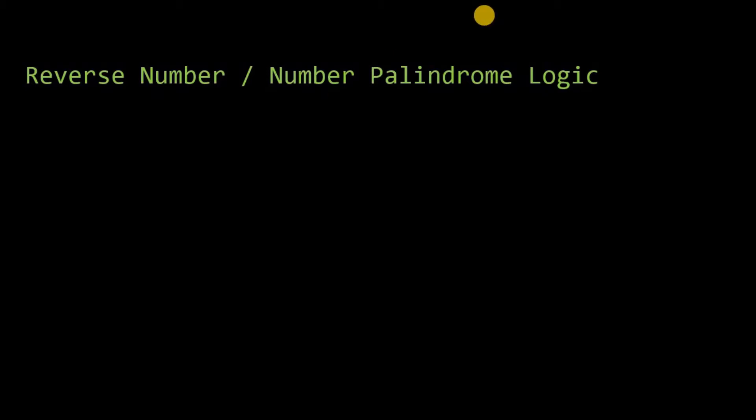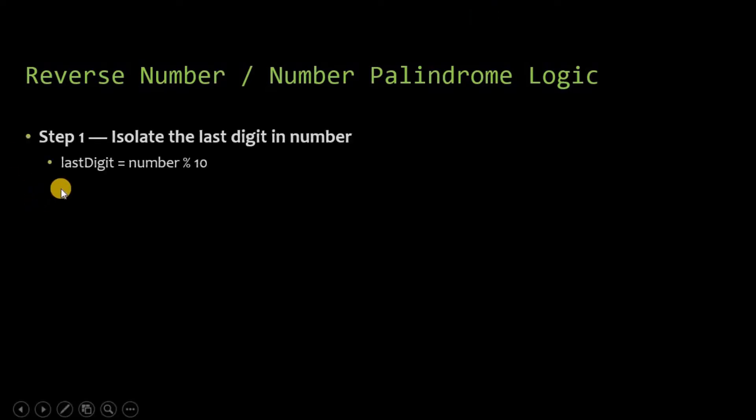You will be given some number, for example say 1234, and you have to reverse this number. The reverse of this number is 4321. The logic is to first isolate the last digit in the number — if it is 1234, the last digit is 4. This can be done with the help of the mod operation: last digit equals number mod 10.